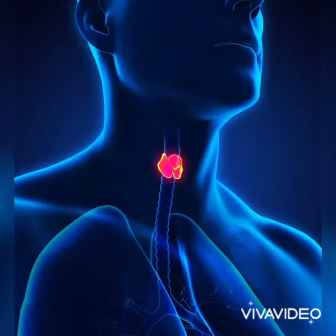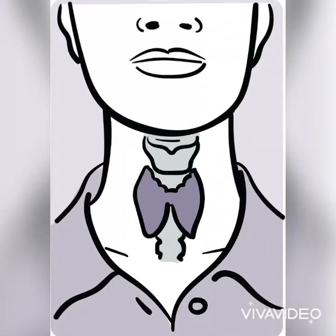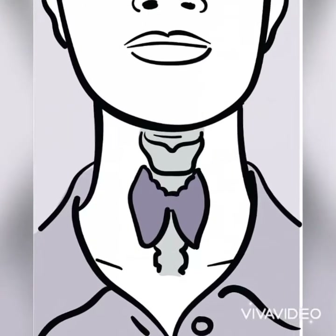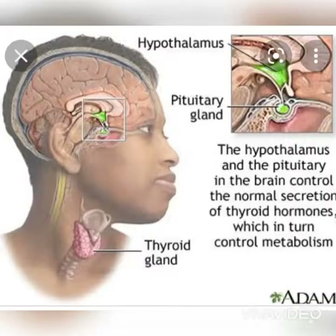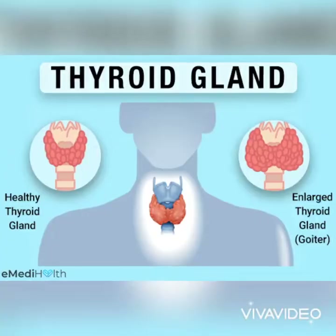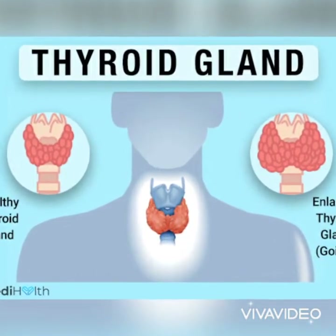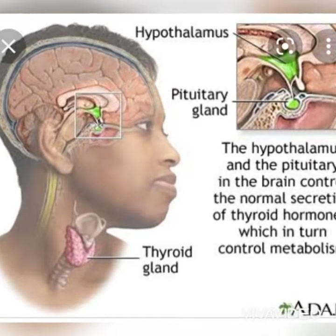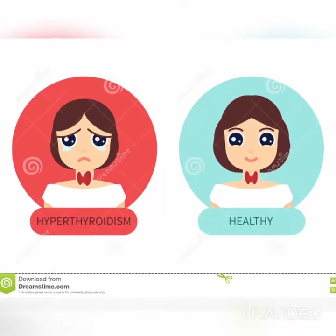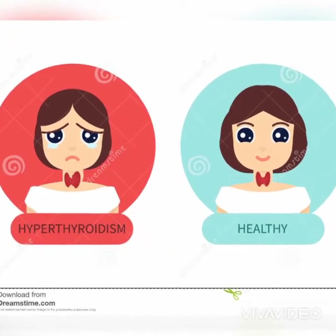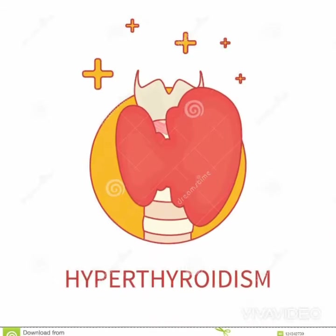It is a very important organ that maintains your whole body and hormones. The thyroid gland is a small organ with a butterfly shape. It is wrapped around your trachea and is easily located. It has two wide wings that are extended on the sides of the throat, meaning the front of the neck.